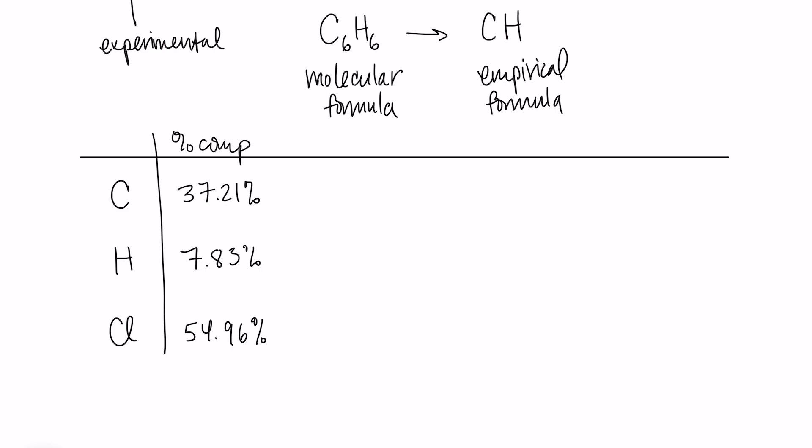Now, what I'm going to do is I'm going to follow this pattern to get from the percent composition to the empirical formula. And it is percent to mass, mass to moles, divide by small, and multiply till whole. So first we have our percent. We're going to turn our percent into a mass. And the way that we're going to do that is we're going to make an assumption that we have 100 grams. If we have 100 grams, then the percent composition that we have is just the same as the grams.